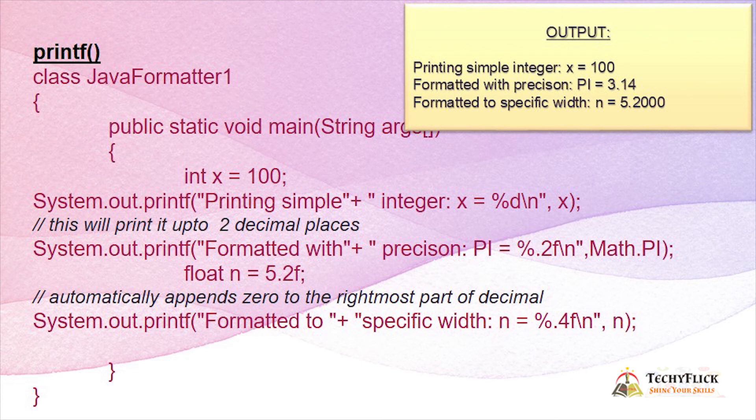Number 3.14, that means point 4 digits. Print next line: "Formatted to specific width: n equals percent .4f" - point 4 numbers. But we declared the value with point 1 number, that is 2. Now we will add zeros to the answer. Formatted to specific width: n equals 5.2000, so now we have 4 numbers after the point.